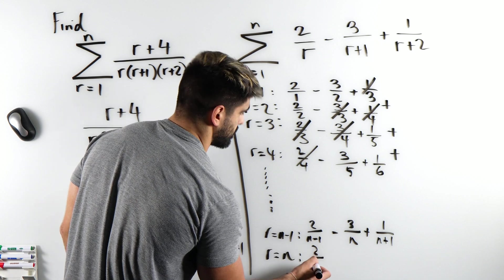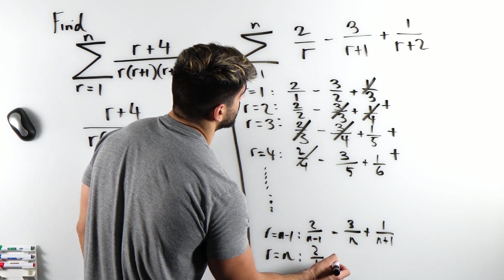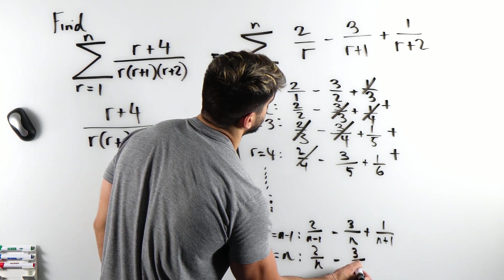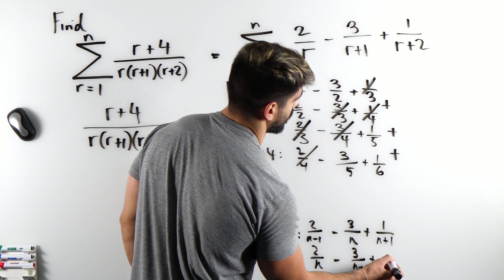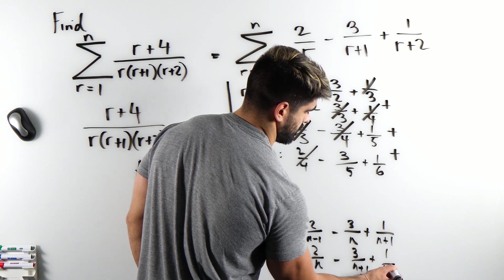Now when we have n, it's just a copy and paste. 2 over n minus 3 over n plus 1 and then 1 sorry, over n plus 2.